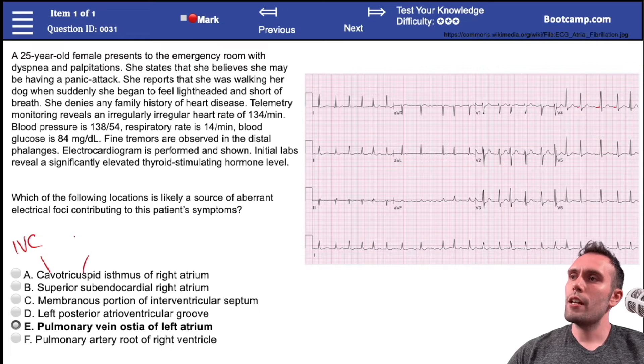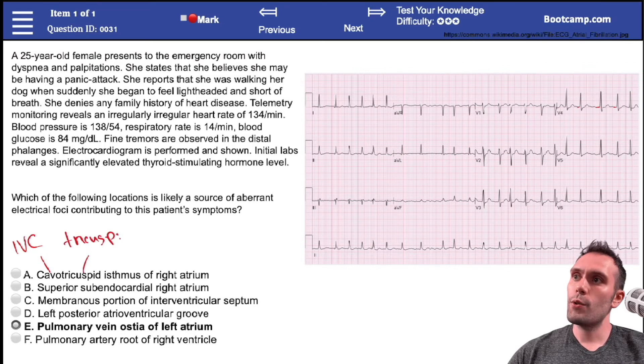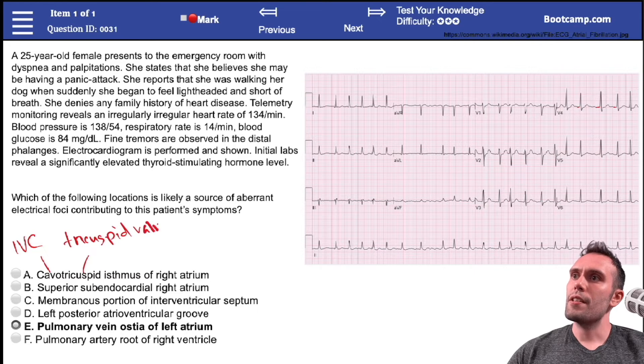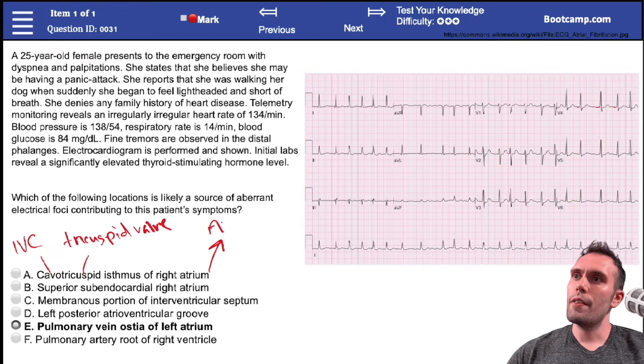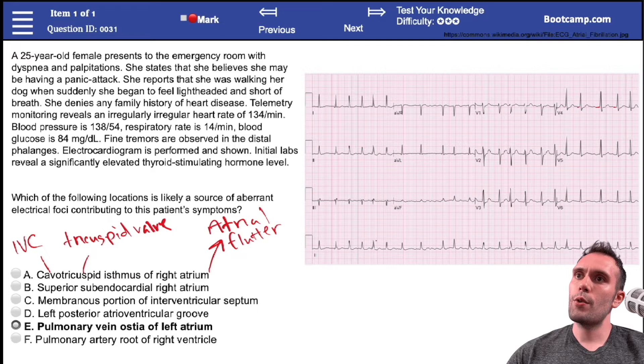What they're really talking about here is the cavo referring to the inferior vena cava, tricuspid referring to the tricuspid area or valve, and this is all in the right atrium. This is very classic for the area that we would do ablations for atrial flutter. We don't have atrial flutter here - we don't have our sawtooth pattern. Instead we're dealing with atrial fibrillation.